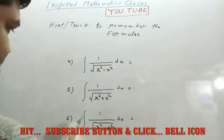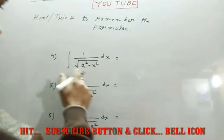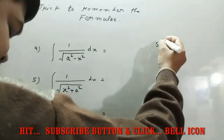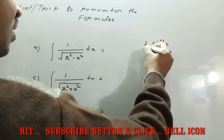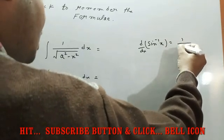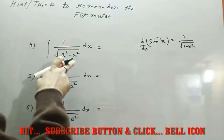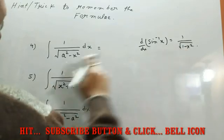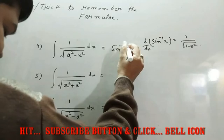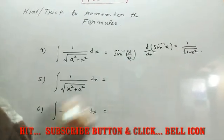Now, the next formula is for formula 4, 5, 6. For the formula, when the function in integrand in the denominator, under root of a square minus x square, under root of x square plus a square, under root of x square minus a square. So, you know the derivative of sin inverse x.